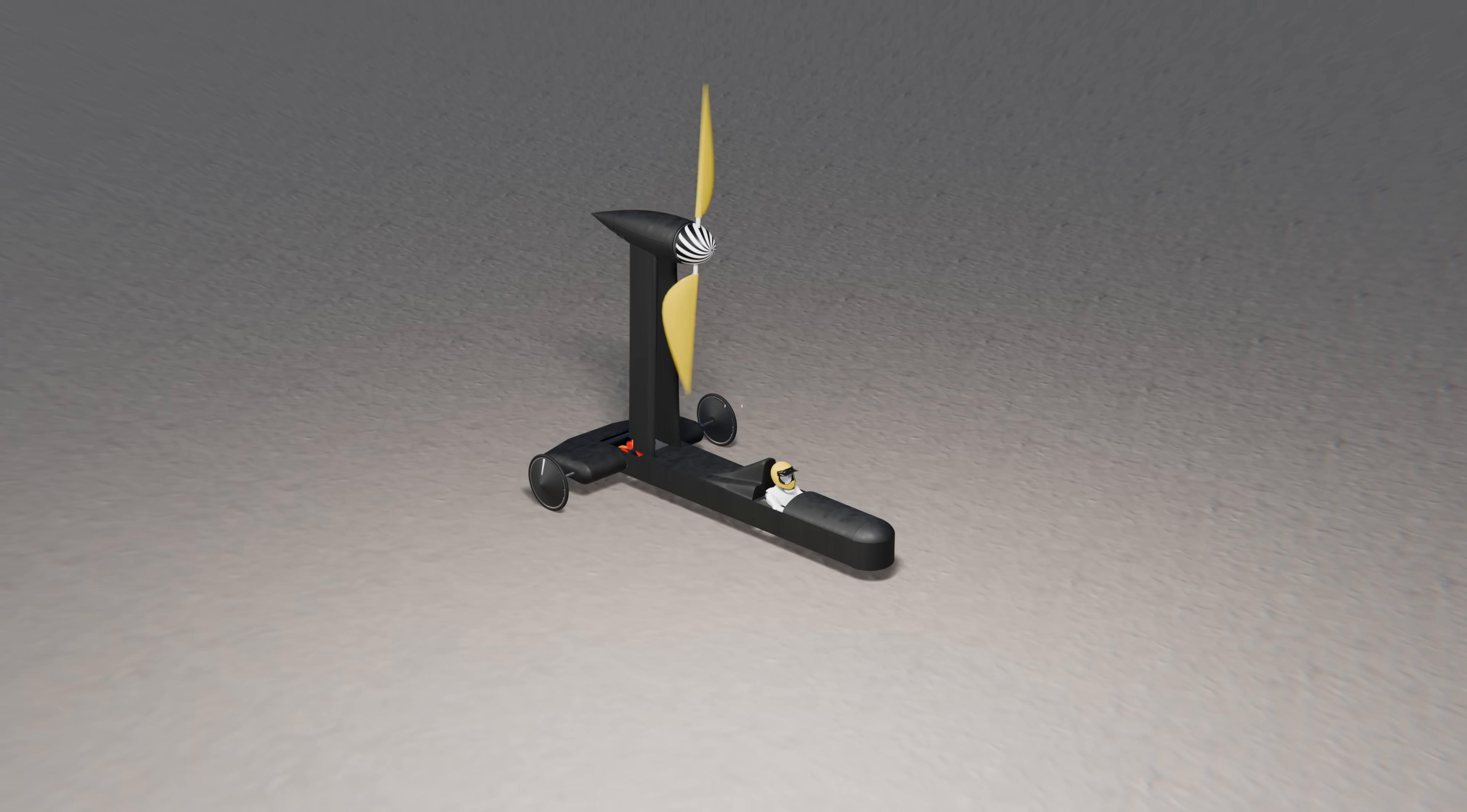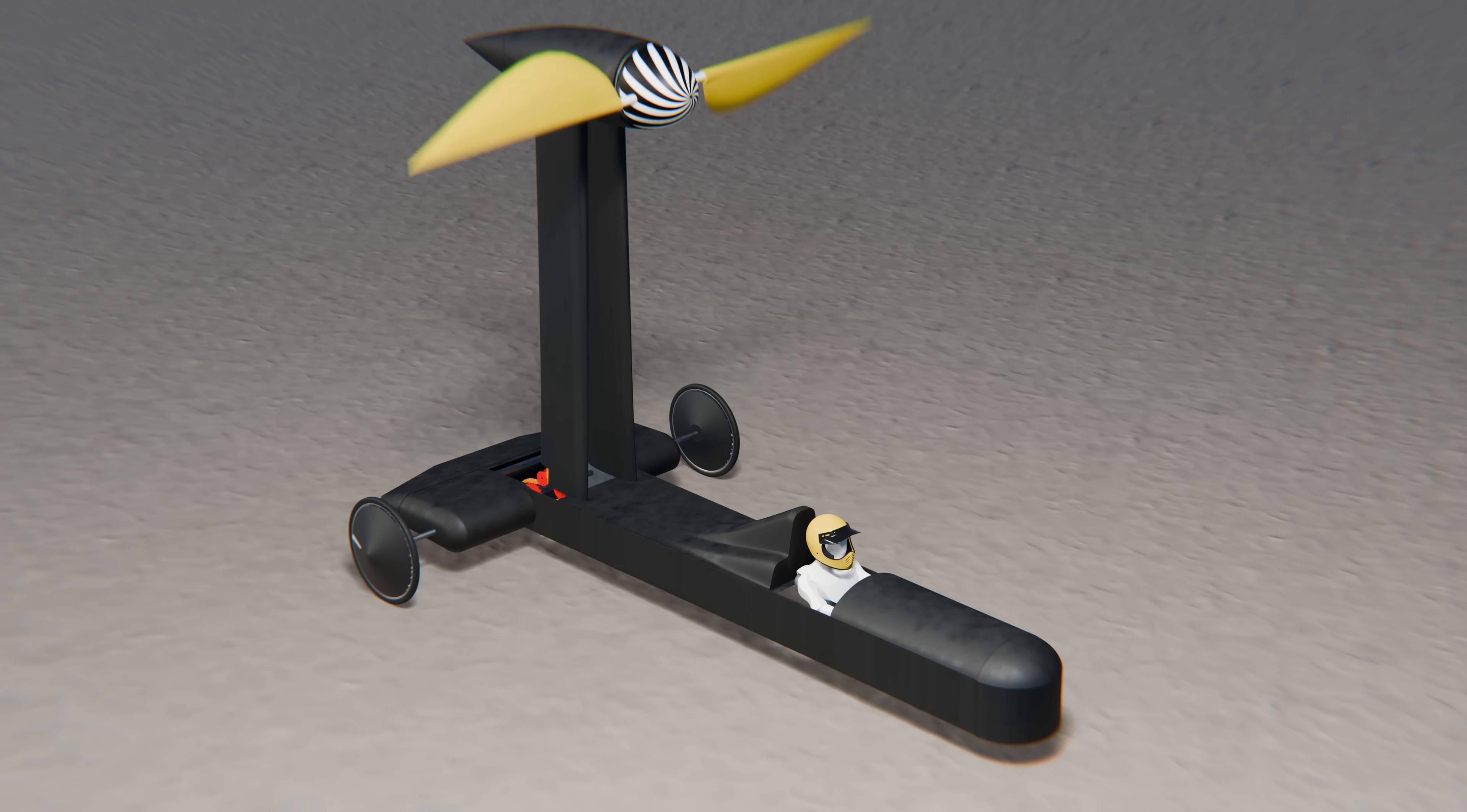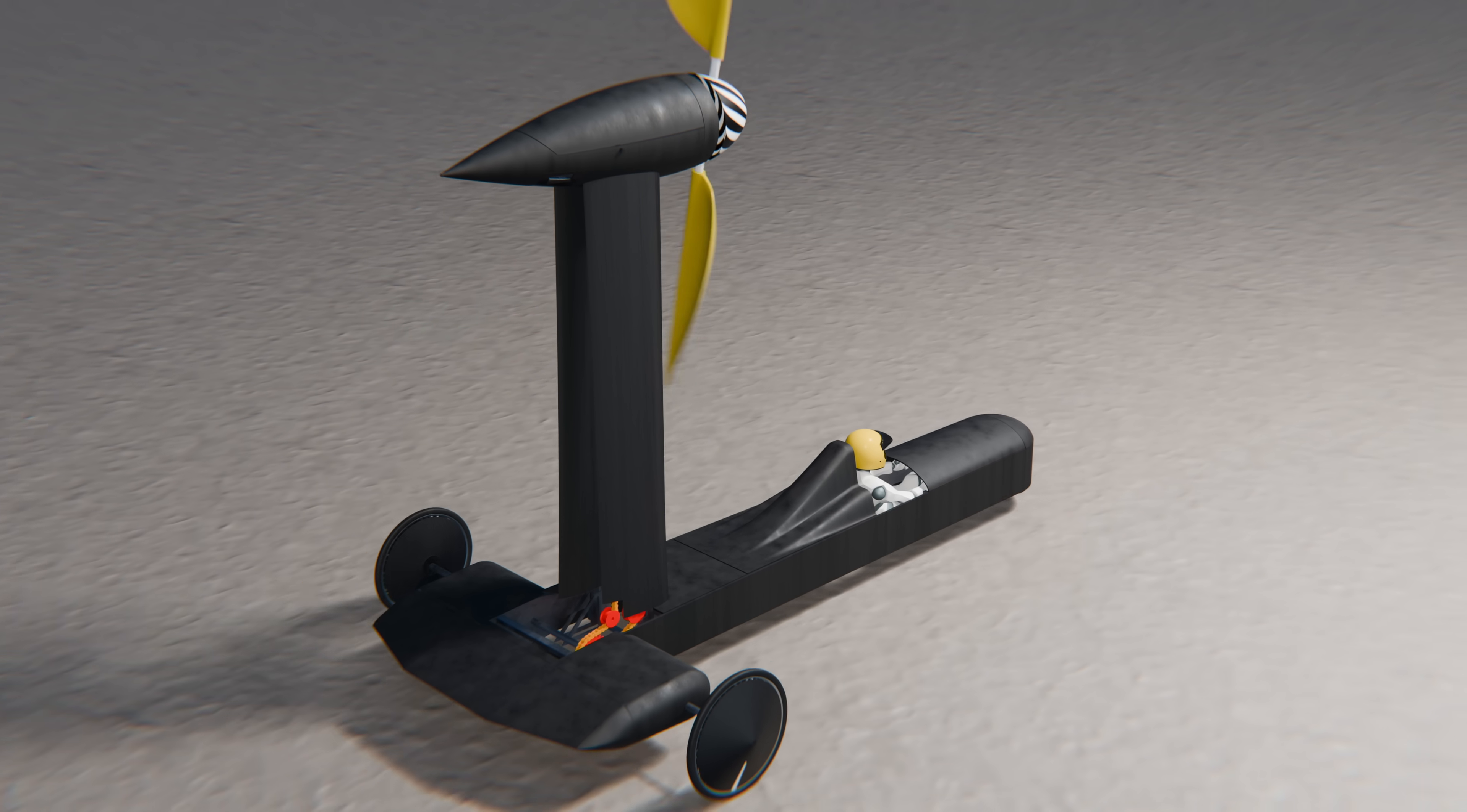In 2021, Veritasium was part of an experiment that proved a car with a propeller linked to its wheels could outrun the wind itself, hitting 44.5 km an hour in a 16 km an hour breeze. Yet four years later, skeptics still call it perpetual motion. Why?